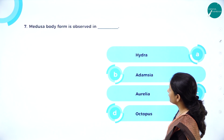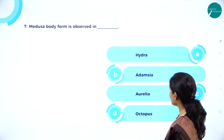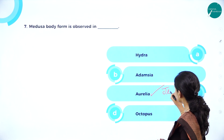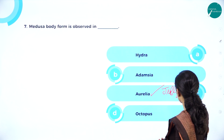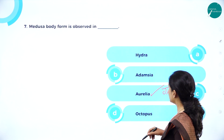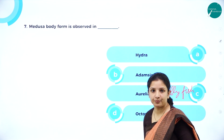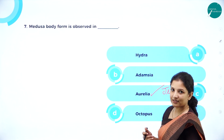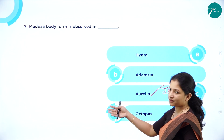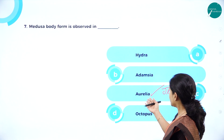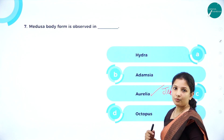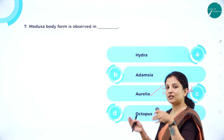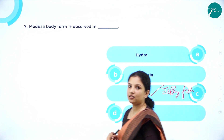Next: Medusa body form is observed in — hydra, adamsia, aurelia, or octopus? Hydra and adamsia show polyp body forms. Octopus doesn't belong to coelenterates and doesn't exhibit medusa form. It is aurelia — also given as jellyfish as an option, which is also correct. Aurelia exhibits the medusa body form, which is umbrella-shaped. So the answer is aurelia.